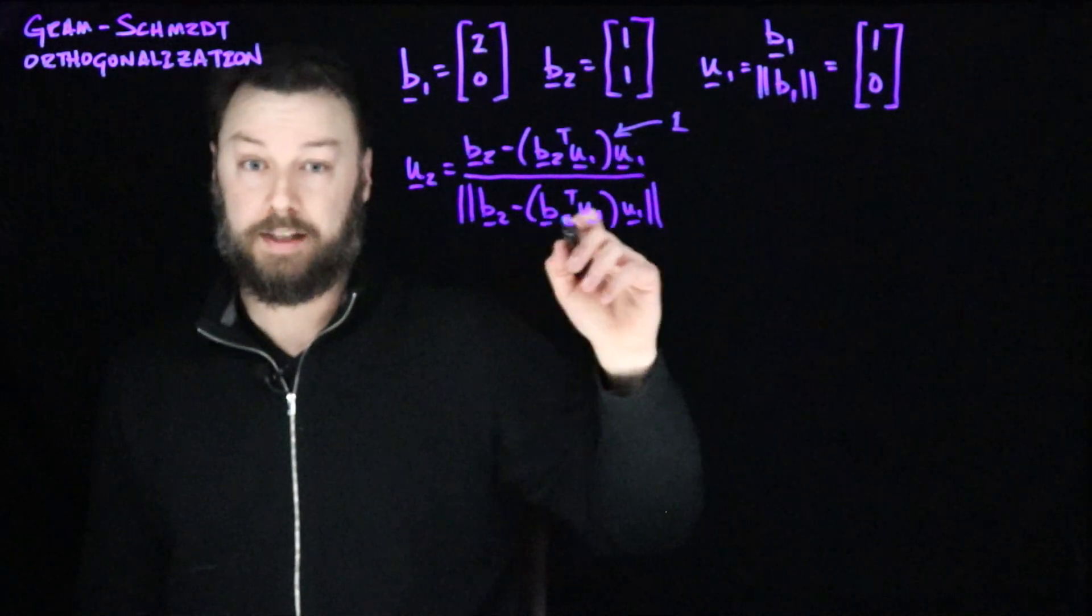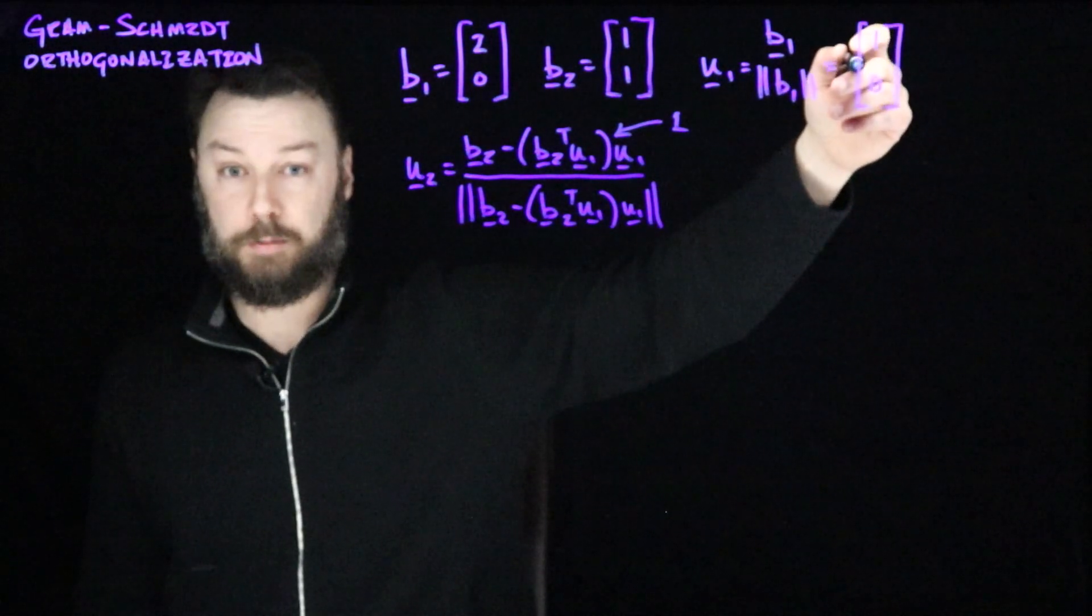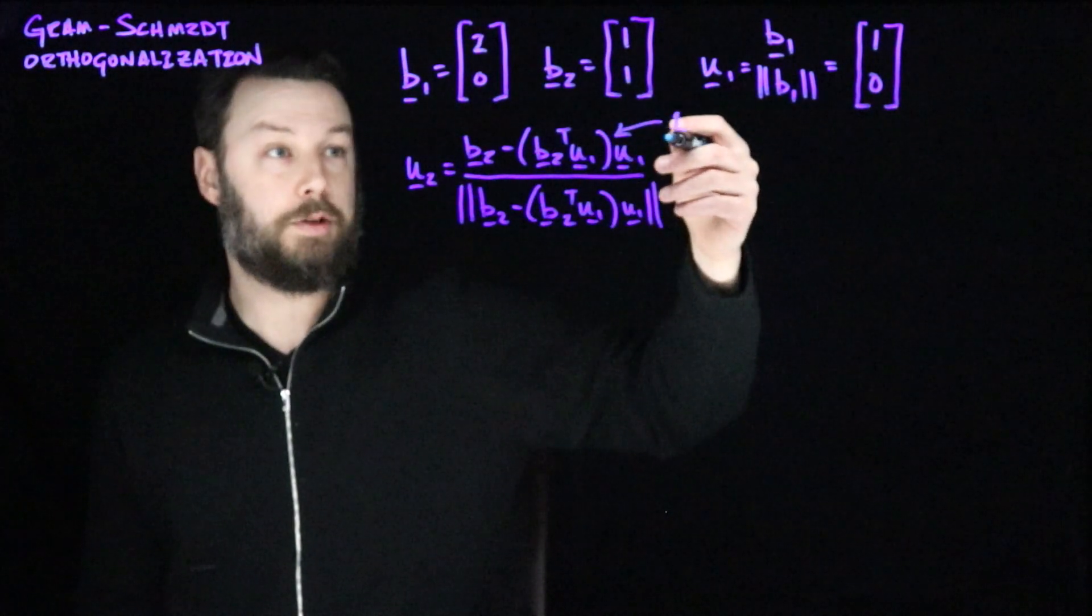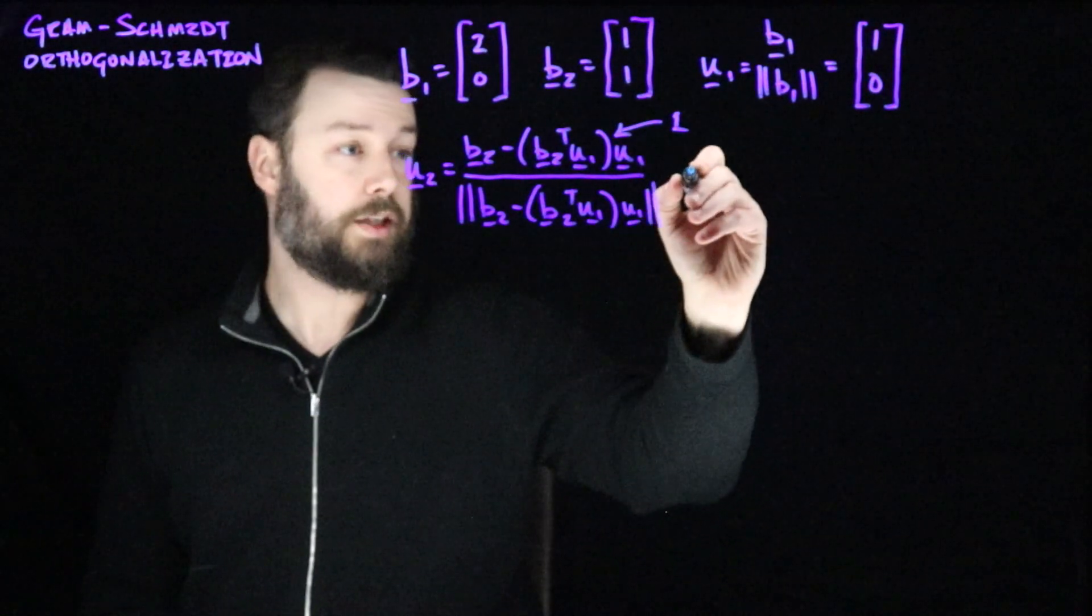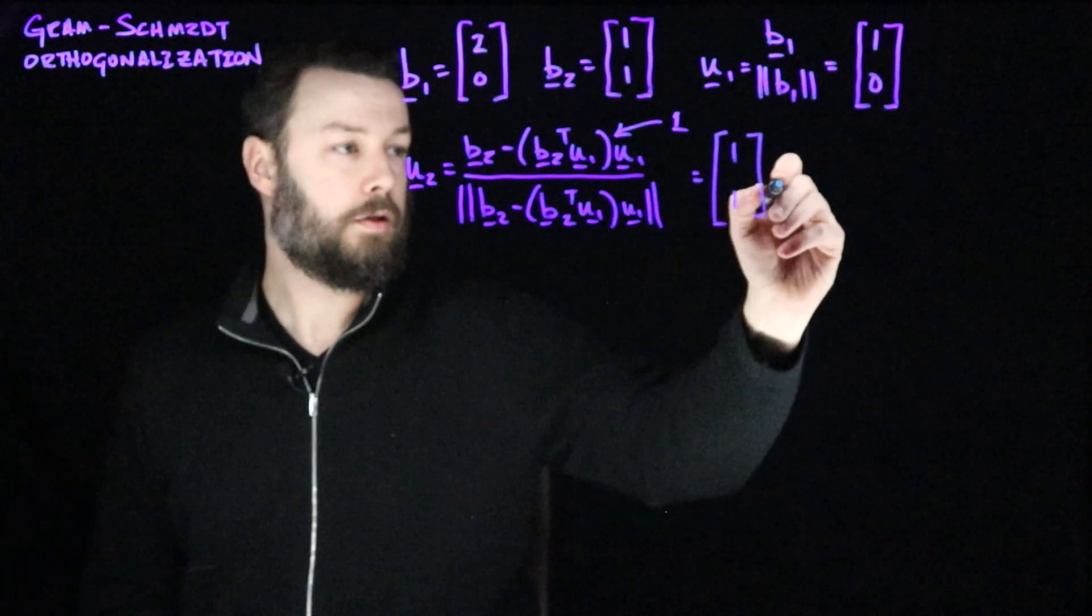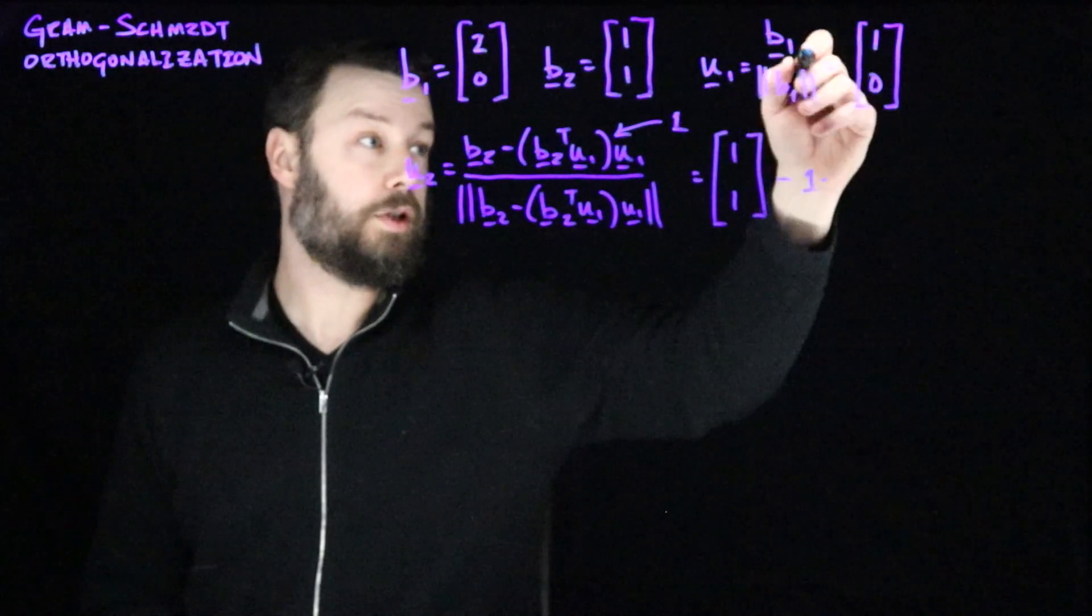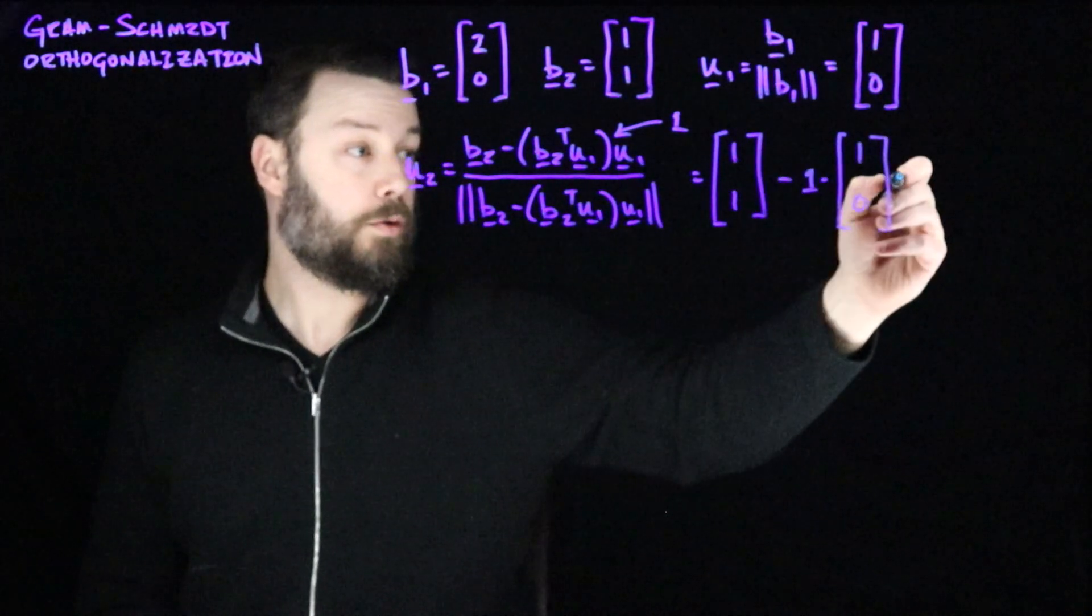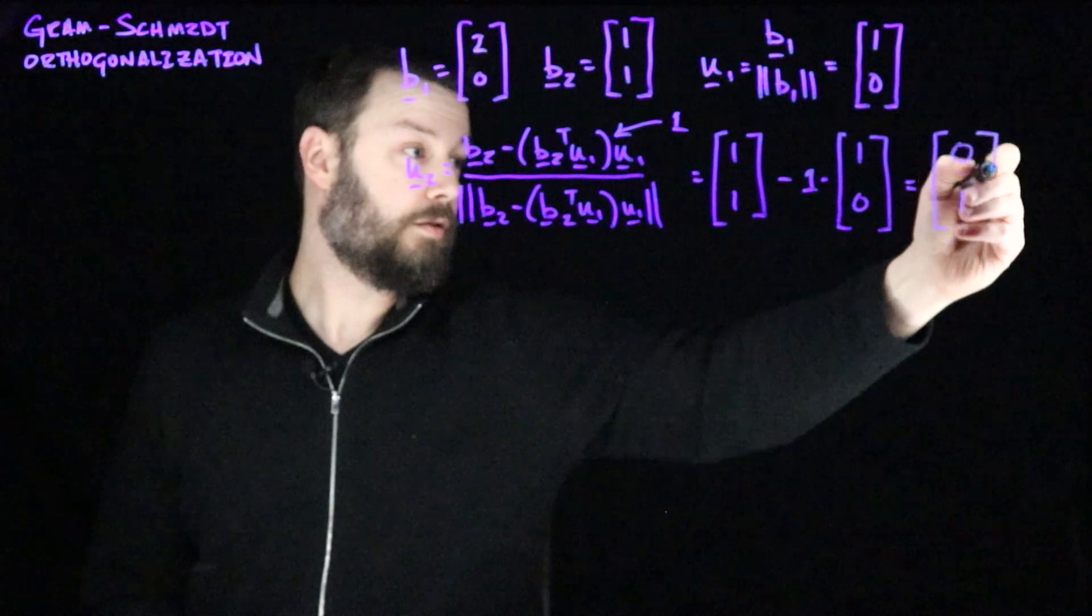And then we're going to scale u1 by that amount. So when we scale u1 by that amount, then that's just giving us this vector back. b2 minus u1 is just going to be what? It's going to be 0, 1. So if we write that out, then we see that we get the vector b2. So 1, 1 minus 1 multiplied by u1, which is 1, 0. And so of course, this just gives us another element of the standard basis, 0, 1. So it's a very simple example.